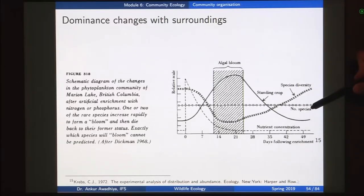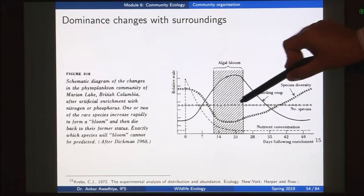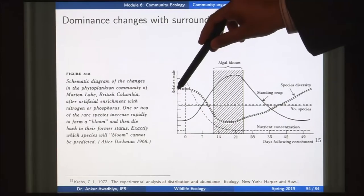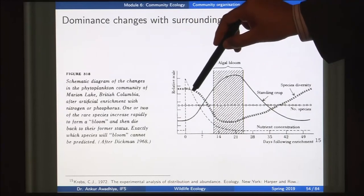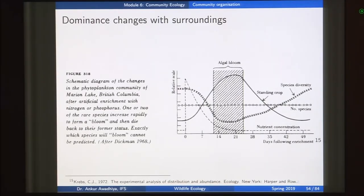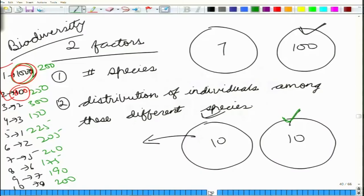If we look at the number of species in this lake throughout this short experiment, it remains constant because no extinction of any species occurred. But if we look at species diversity, it reduced considerably and then started to increase. Why? Because even with the same number of species, if the distribution of individuals among species changes, the level of diversity can reduce.